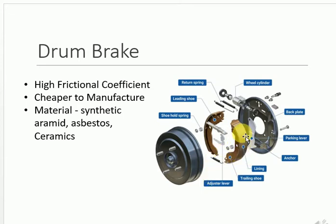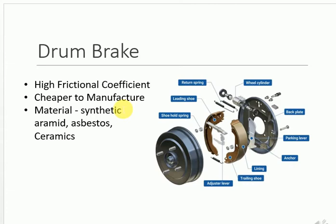The brake shoes come in contact with the brake drum and through frictional force stop your vehicle. There is a back plate where the brakes are mounted, which does not rotate with your hub. The advantage of drum brakes is that they are cheaper to manufacture — that is why on two-wheelers less than 100cc, both front and rear brakes will have drum brakes. The material used for the brake lining is synthetic material, which has a higher friction coefficient, sometimes with ceramics.